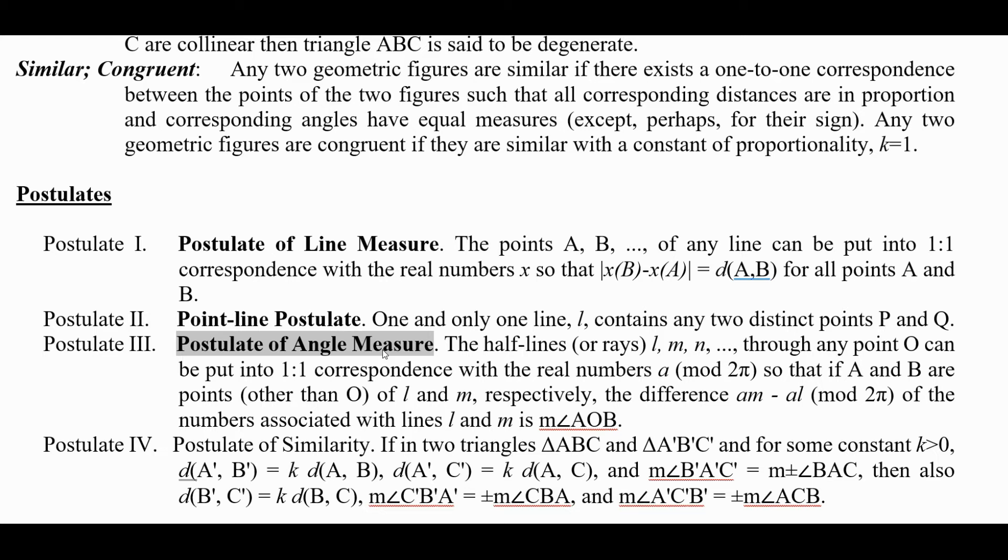so that if A and B are points other than O of L and M respectively, the difference A(M) - A(L) modulo 2π are the numbers associated with lines L and M and that's the measure of the angle.